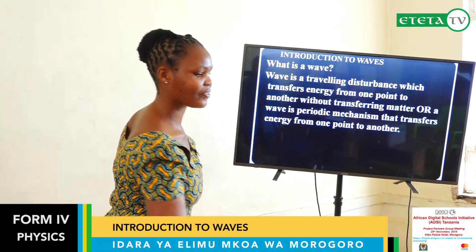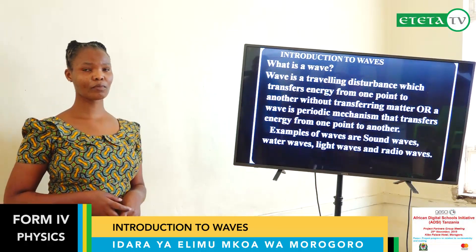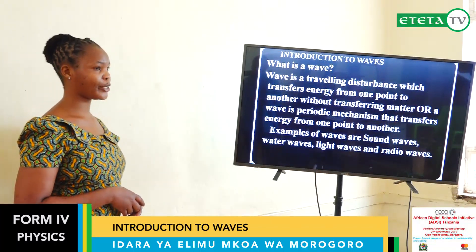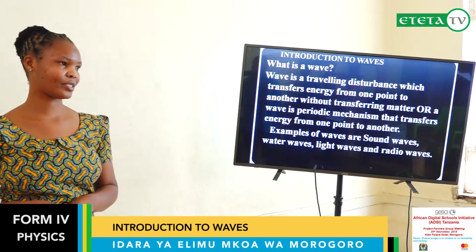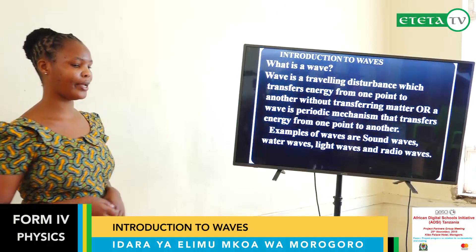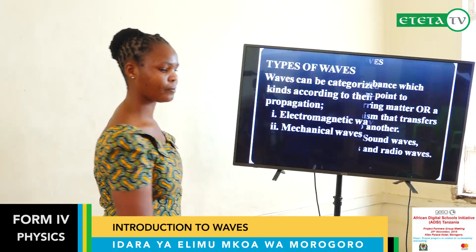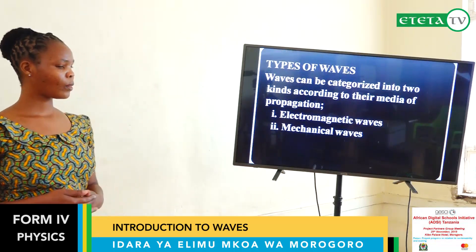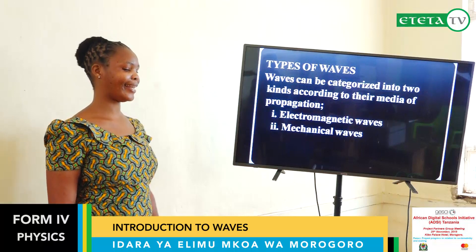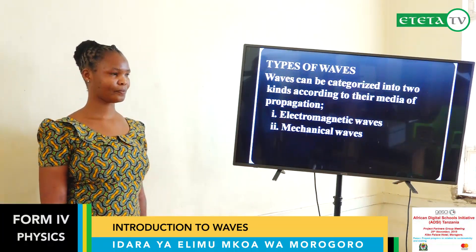We have some examples of waves: sound waves, water waves, light waves, and radio waves. We have two types of waves: electromagnetic waves and mechanical waves.